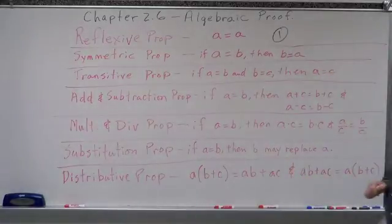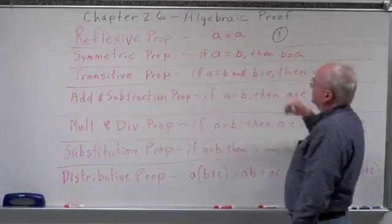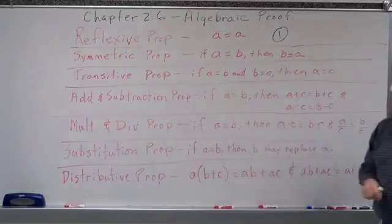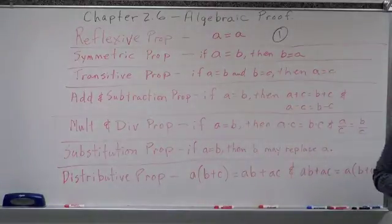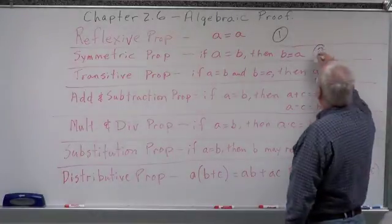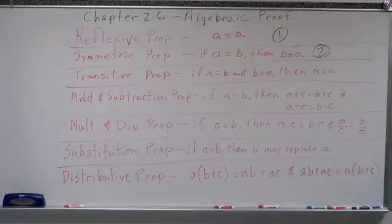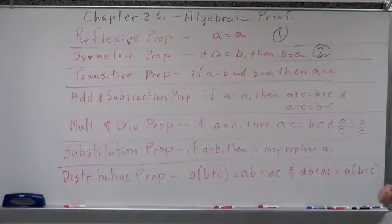Symmetric property: if A equals B, then the reverse is also true — B equals A. I call that the identical twin property. Two items. If one looks like the other, then the other looks like the first.